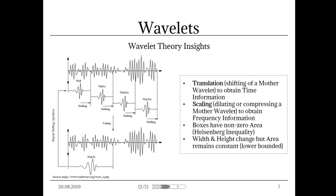After we translate the wavelet through the signal, we take it and stretch it. To be more precise, we dilate or compress the wavelet and repeat the translation again. This whole process is called scaling, since we change the scale of the wavelet. It is important to note that the shape of the wavelet always stays the same.